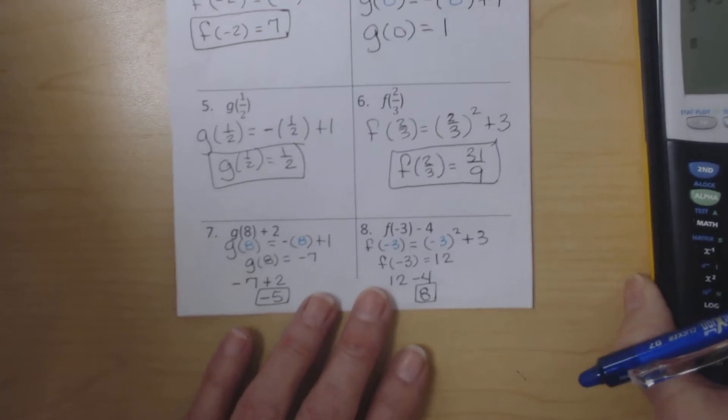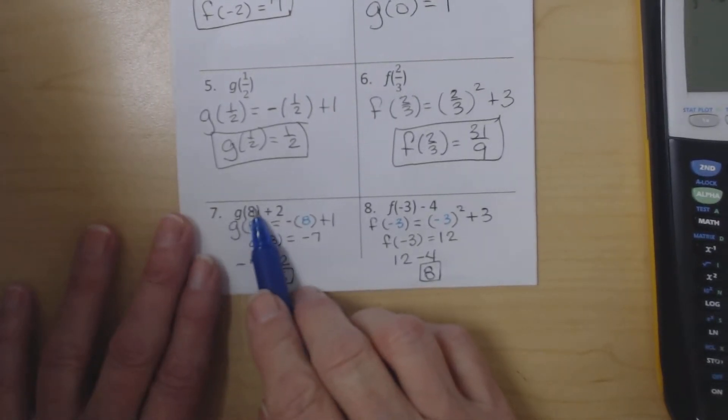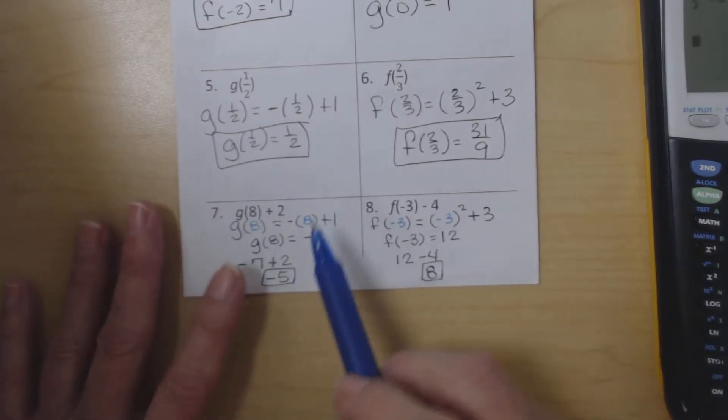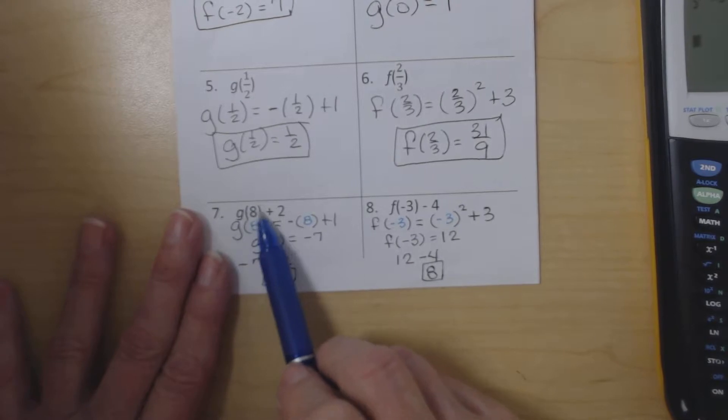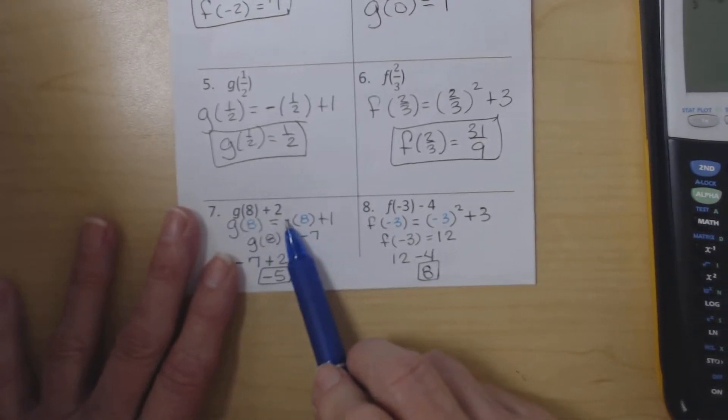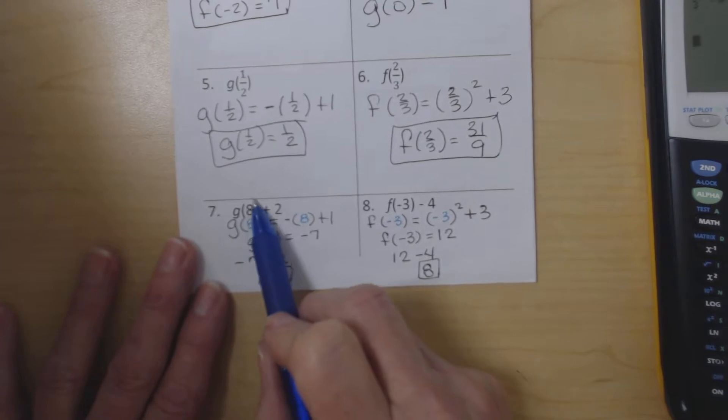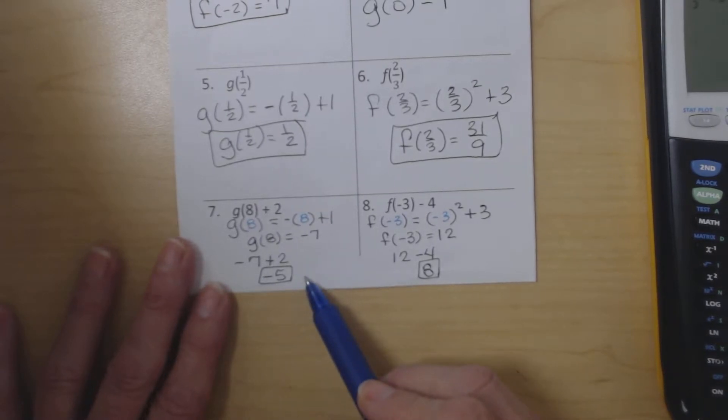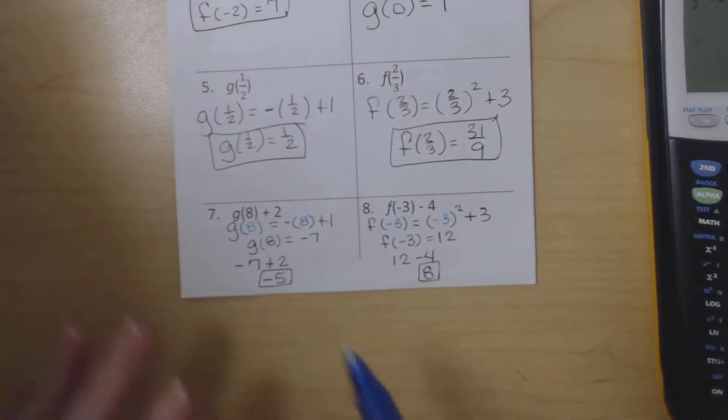Now in 7 and 8 you don't have just a function you're trying to evaluate, but you have to evaluate the function and then after you have that number do something else to it. So I'm going to take the g(8) part and evaluate it. g(8) equals the opposite of x plus 1, so -8 plus 1 which gives us -7. So this piece right here is -7. And then we're going to add 2 to it. Negative 7 plus 2 is -5.